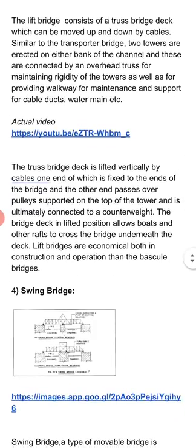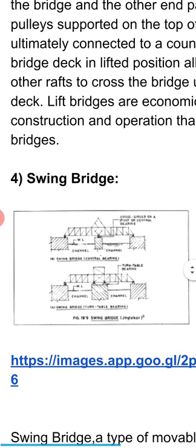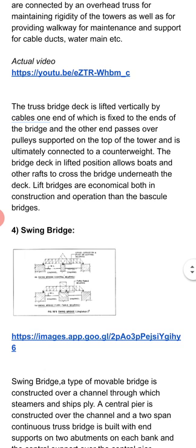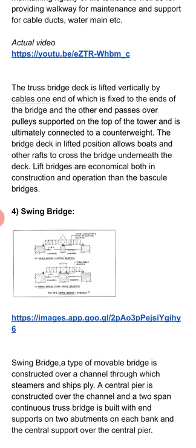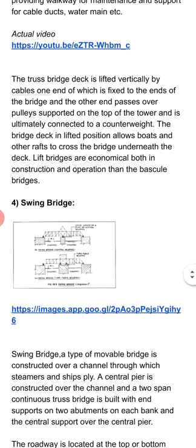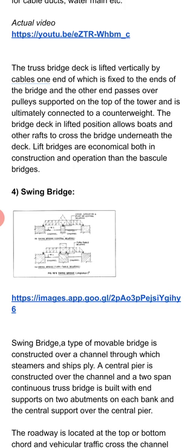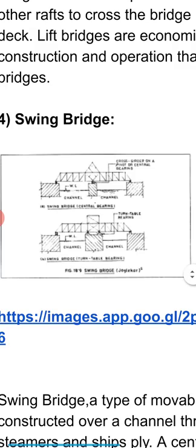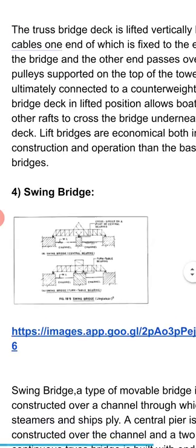Now we'll see the swing bridge. Nowadays nobody is constructing this swing bridge. It has a circular pier. A swing bridge is a type of movable bridge constructed over a channel through which steamers and ships ply. There is a central pier constructed over the channel, and a two-span continuous truss bridge is built with end supports on two abutments on each bank and the central support over the central pier.